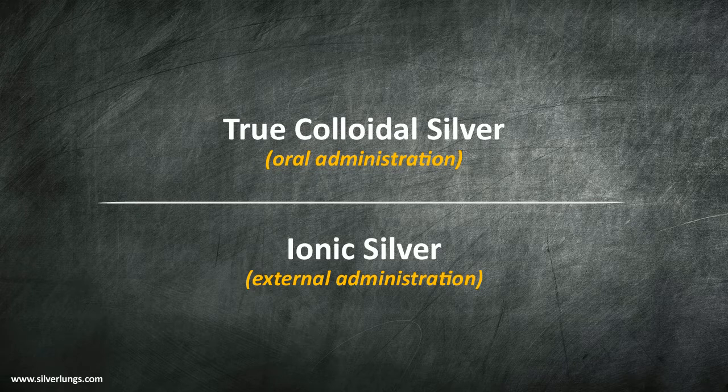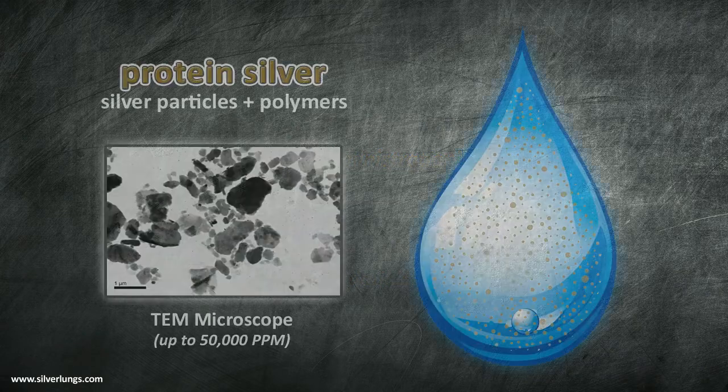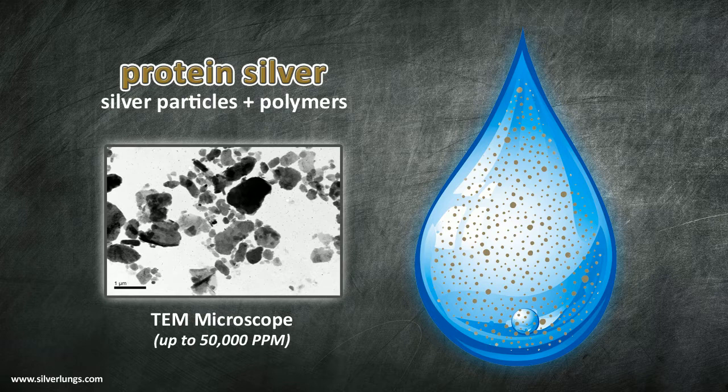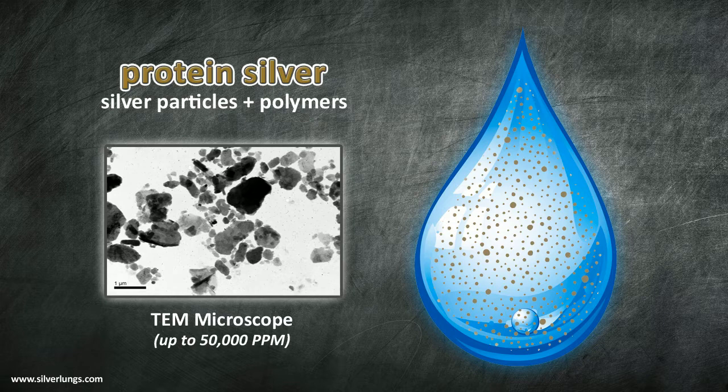Our next form of silver to discuss is called mild silver protein. This is a very highly concentrated type of silver solution with concentrations well in excess of 500 ppm and many times as high as 50,000 ppm. Keep in mind that traditional ionic and colloidal silver solutions rarely exceed just 50 ppm.